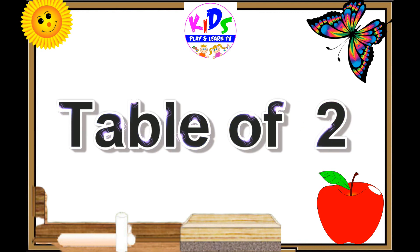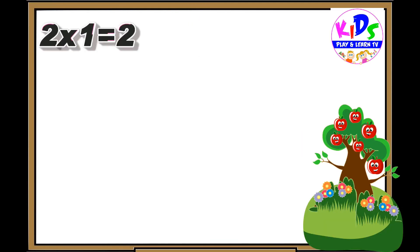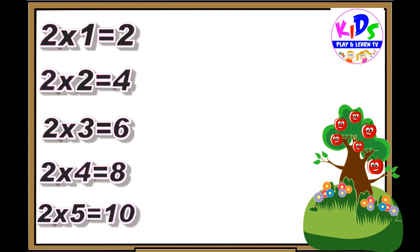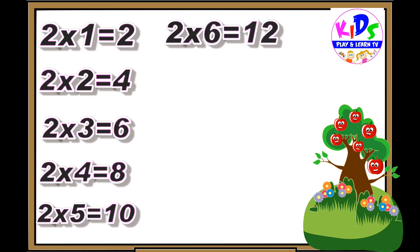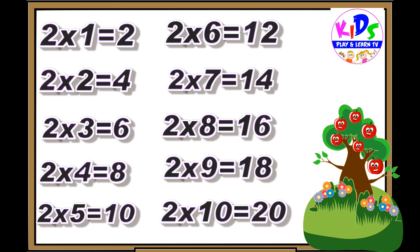Hey kids, let's repeat. Two ones are two, two twos are four, two threes are six, two fours are eight, two fives are ten, two sixes are twelve, two sevens are fourteen, two eights are sixteen, two nines are eighteen, two tens are twenty.